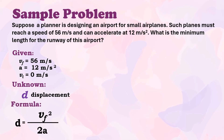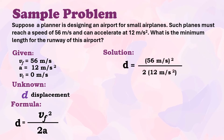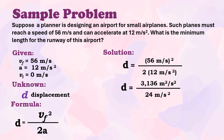Now we proceed with the solution. v_f² = 56², which equals 3,136. And 2 × 12 = 24 m/s². Therefore, 3,136 ÷ 24 = 130.67 meters.